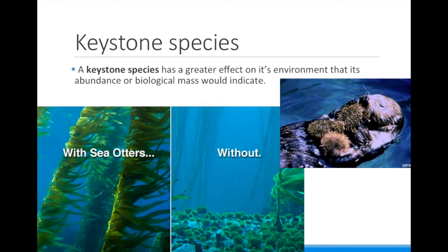When the sea otters were removed, the number of sea urchins in the community skyrocketed. The sea urchins ate the algae, but in the kelp forest the algae is very tall and skinny, and it's only connected to the bottom by a small portion called the holdfast. So the sea urchins only had to eat a very little bit of the kelp and the rest of the stalk would float away, meaning the kelp forest was destroyed. Without the otters, there was no kelp forest. The otters ate the sea urchins, keeping their relative abundance low, which prevented them from eating too much of the kelp.